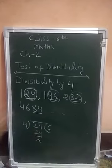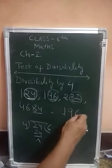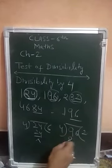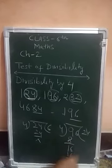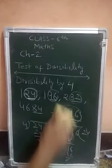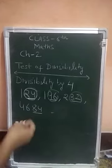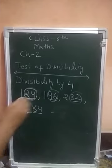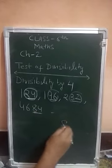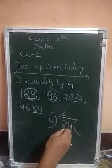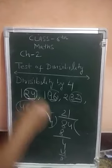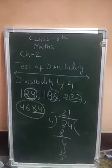So 124 is divisible by 4. For 196, we check 96 — 96 is divisible by 4, so 196 is also divisible by 4. For the 4-digit number 4684, we check the last 2 digits: 84. Since 84 is divisible by 4, the whole number 4684 is also divisible by 4.